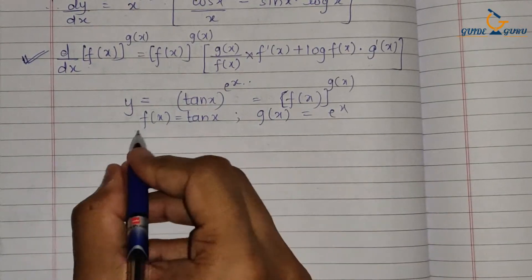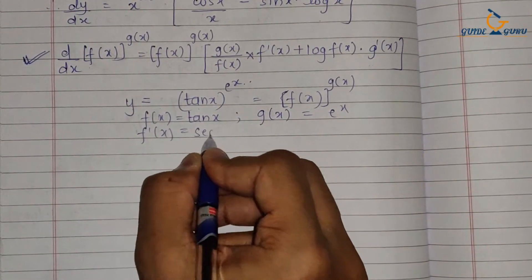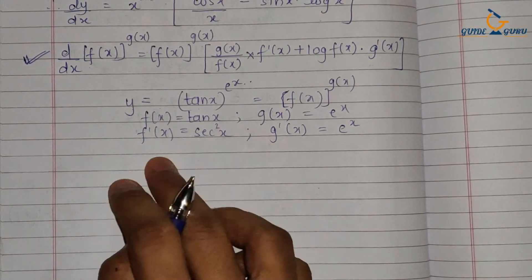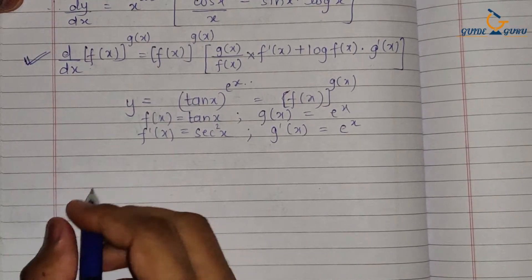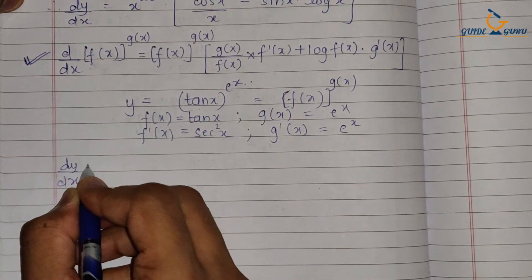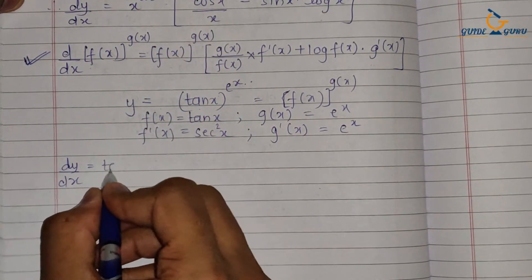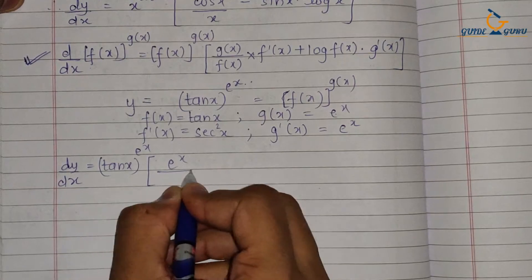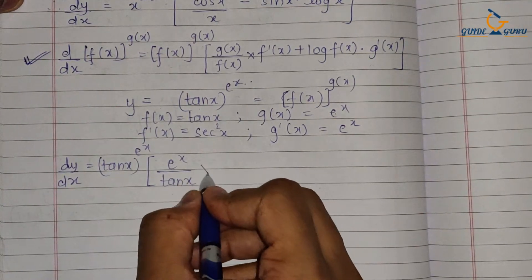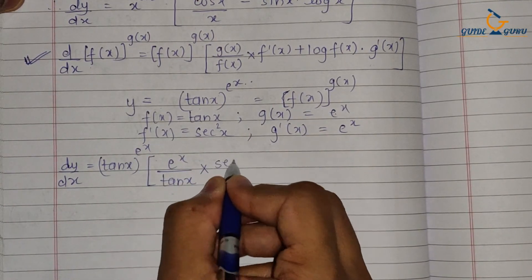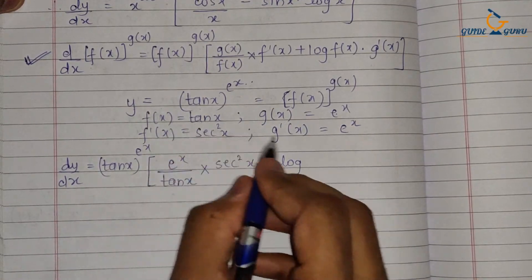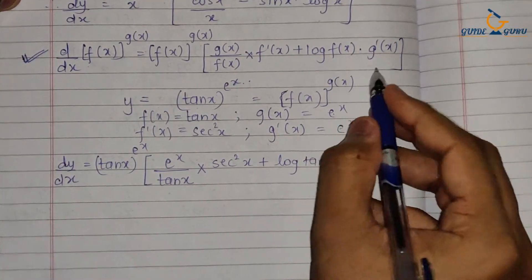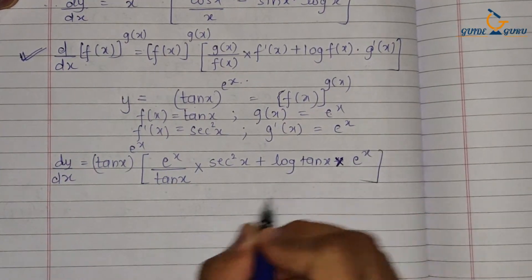Now calculating the derivatives: f'(x) is the derivative of tan x, which is sec²x, and the derivative of e^x remains the same, which is e^x, so g'(x) = e^x. Applying the formula, dy/dx equals the function copied as it is — tan(x)^(e^x) — then bracket: g(x) upon f(x) = e^x upon tan x, into f'(x) = sec²x, plus log of f(x) = log(tan x), into g'(x) = e^x.